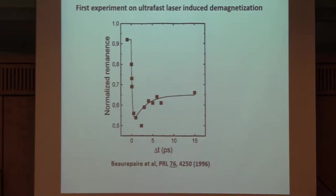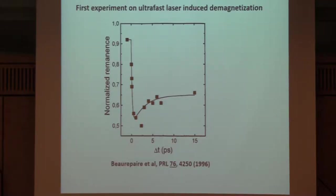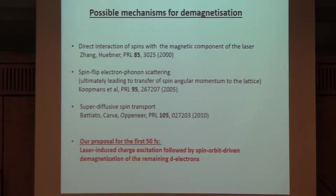This field was initiated by an experimental paper that showed that demagnetization induced by a short laser pulse can be achieved on a scale of something like a picosecond. Now we know it can be made even faster, less than 100 femtoseconds. There are many suggestions in the literature about what the mechanism of this demagnetization is—direct interaction of spins with the magnetic component of the laser, spin flip, electron-phonon scattering, super-diffusive spin transport. While all these mechanisms exist in nature, at very short time scales, actually none of those is active.